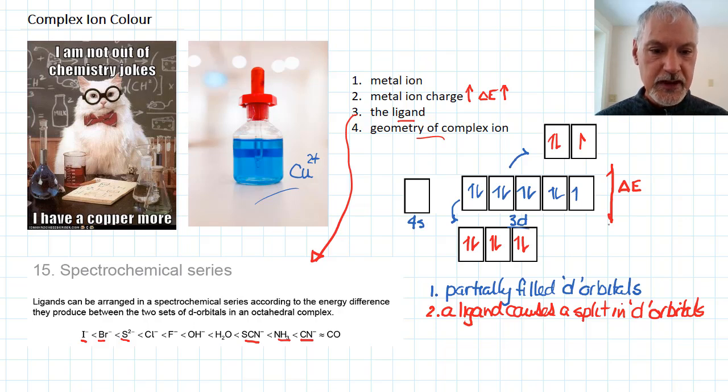Anyway, once I've split these d-energy electrons, the final criteria is then, when my electron transitions or moves, so if I have an electron down here that transitions or moves up to here, it's capable of absorbing a certain wavelength of light.